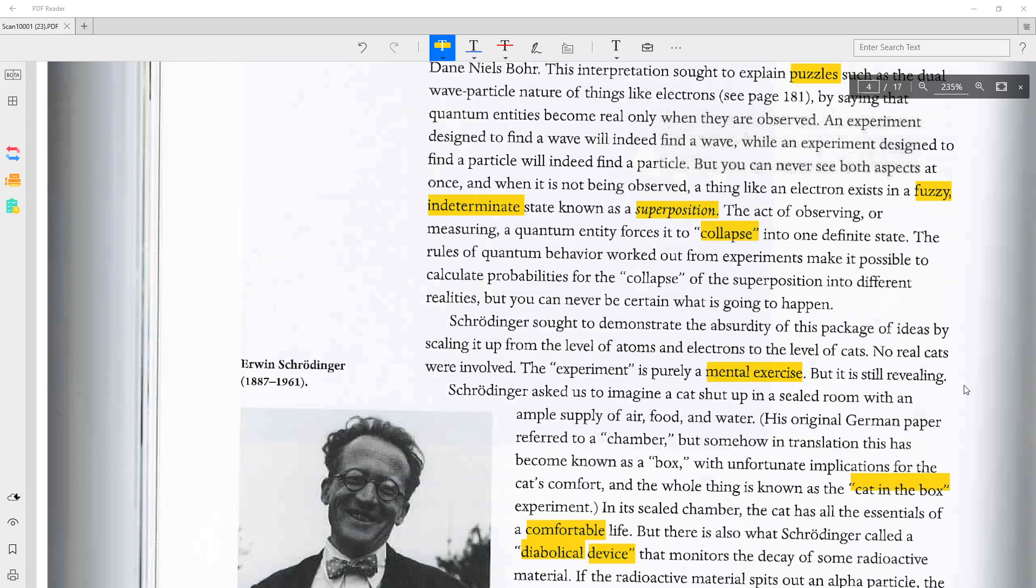The act of observing or measuring a quantum entity forces it to collapse into one definite state. The rules of quantum behavior worked out from experiments made it possible to calculate probabilities for the collapse of the superposition into different realities.